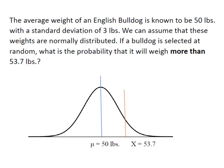The average weight of an English Bulldog is known to be 50 pounds with a standard deviation of 3 pounds. We can assume that these weights are normally distributed. If a Bulldog is selected at random, what is the probability that it will weigh more than 53.7 pounds or this area under the curve right here.